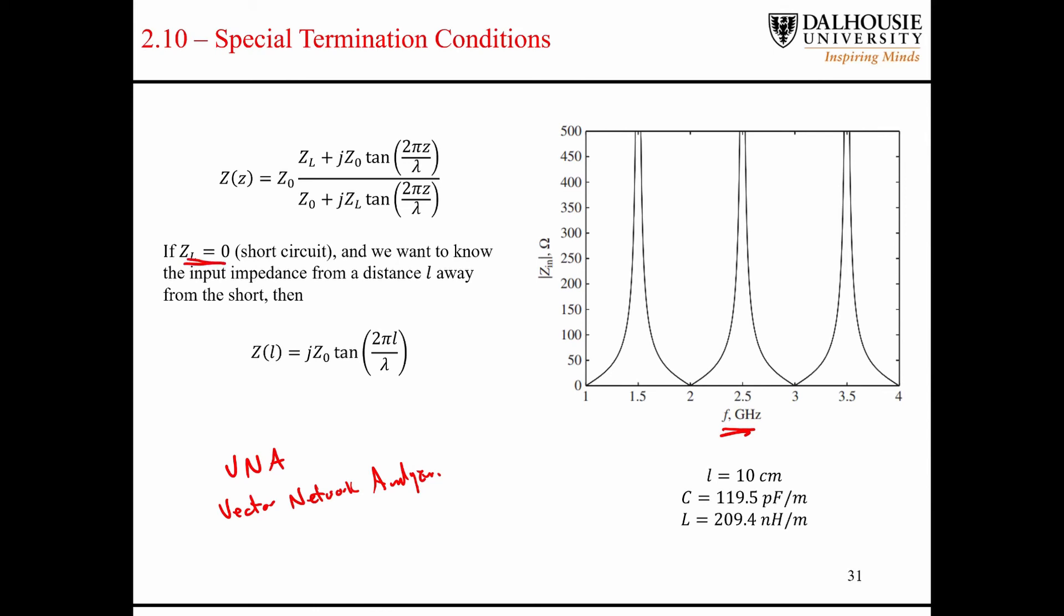So in this example here, they have some type of transmission line, maybe coaxial cable shorted, they set their VNA up to sweep from 1 to 4 gigahertz. And at 1 gigahertz, 2 gigahertz, 3 gigahertz, and 4 gigahertz, it looks like a short circuit. But at these frequencies here, it looks like an open circuit. And then at the frequencies in between, it looks like something completely different. This is just basically saying the same thing, except it's highlighting the variation with frequency, which is critically important.